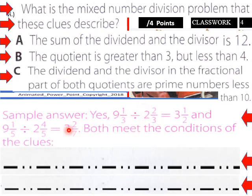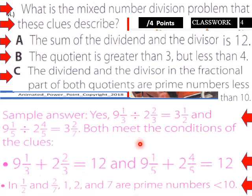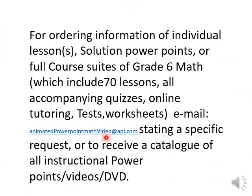Both division problems meet all the qualifications. Nine and one-third plus two and two-thirds equals 12, so the sum of the dividend and divisor is 12. Likewise, nine and one-fifth plus two and four-fifths also equals 12. And one-half and two-sevenths — one, two, and seven are prime numbers less than 10. That's a fun one, and that is your lesson for today. Animated PowerPoint math video at alo.com — for questions or course materials, thank you very much.